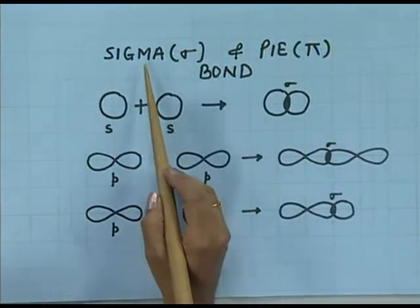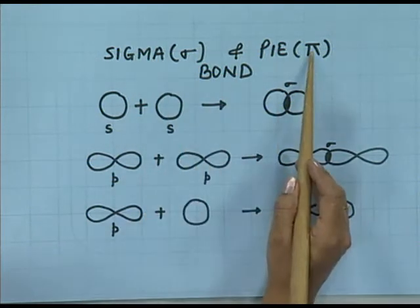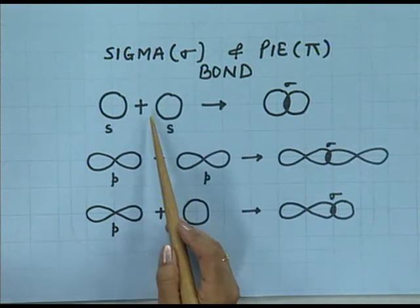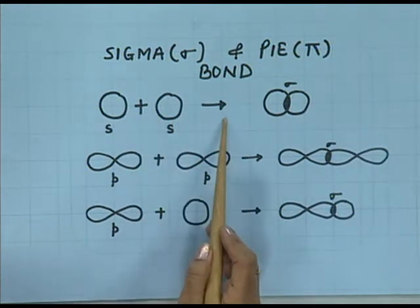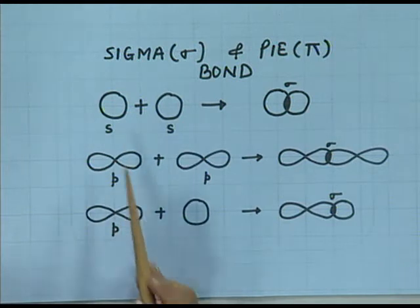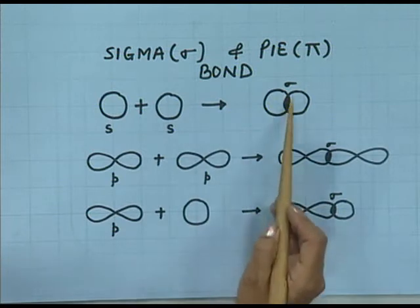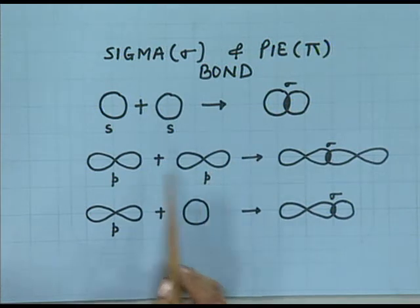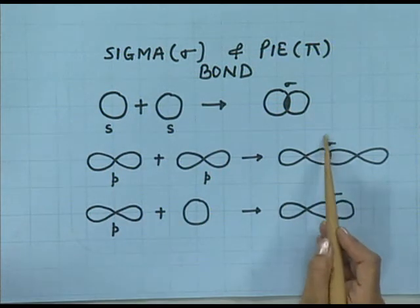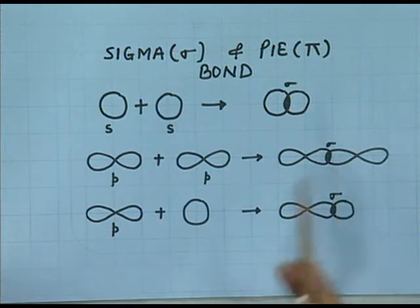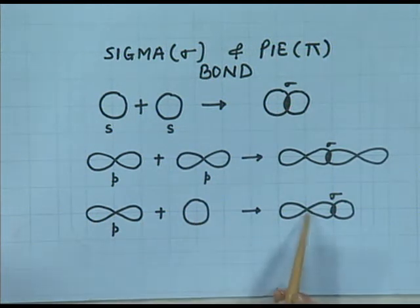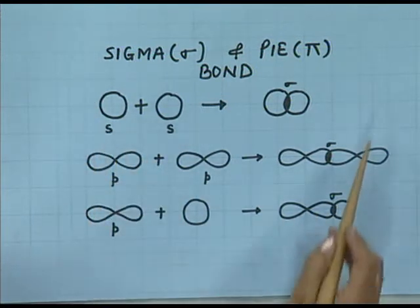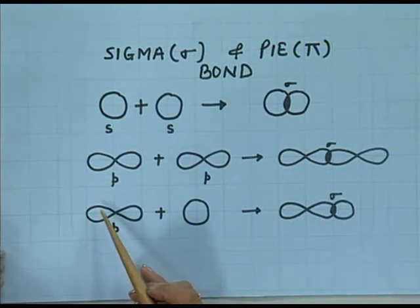Before going into much detail of hybridization, there are two types of bonds: sigma bond and pi bond. Sigma bond is formed by end-to-end overlapping. It is possible in three situations: when an s orbital overlaps with an s orbital, a sigma bond is formed; when a p orbital overlaps with a p orbital along the internuclear axis, a sigma bond is formed; and when an s orbital overlaps with a p orbital along the internuclear axis.